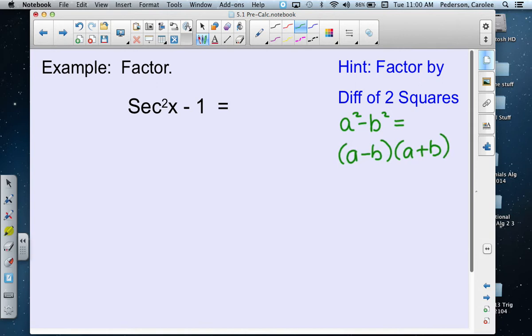Now let's go to our example. We want to factor sec²x - 1. This factors as the perfect squares: secant of x and secant of x, and negative 1 factors as 1 times 1, so we have (secx + 1)(secx - 1).